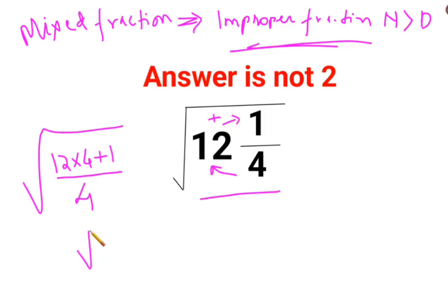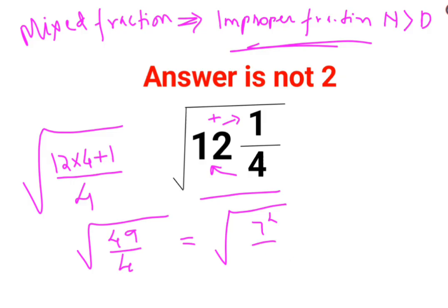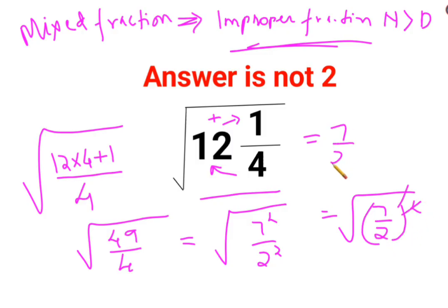So this gives us root of 48 plus 1, so 49 upon 4, which can be written as 7 squared upon 2 squared. So this can be written as root of (7 upon 2) the whole square. The square and the root cancel, so the answer is 7 by 2, or you can say 3.5. Both of these answers are absolutely correct for this particular question.